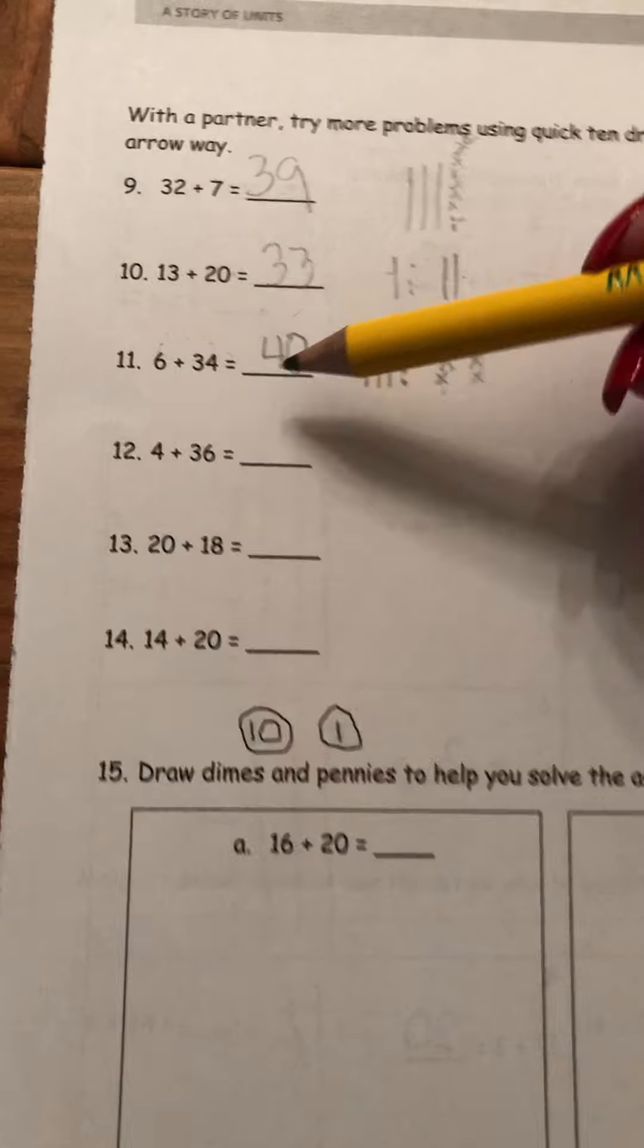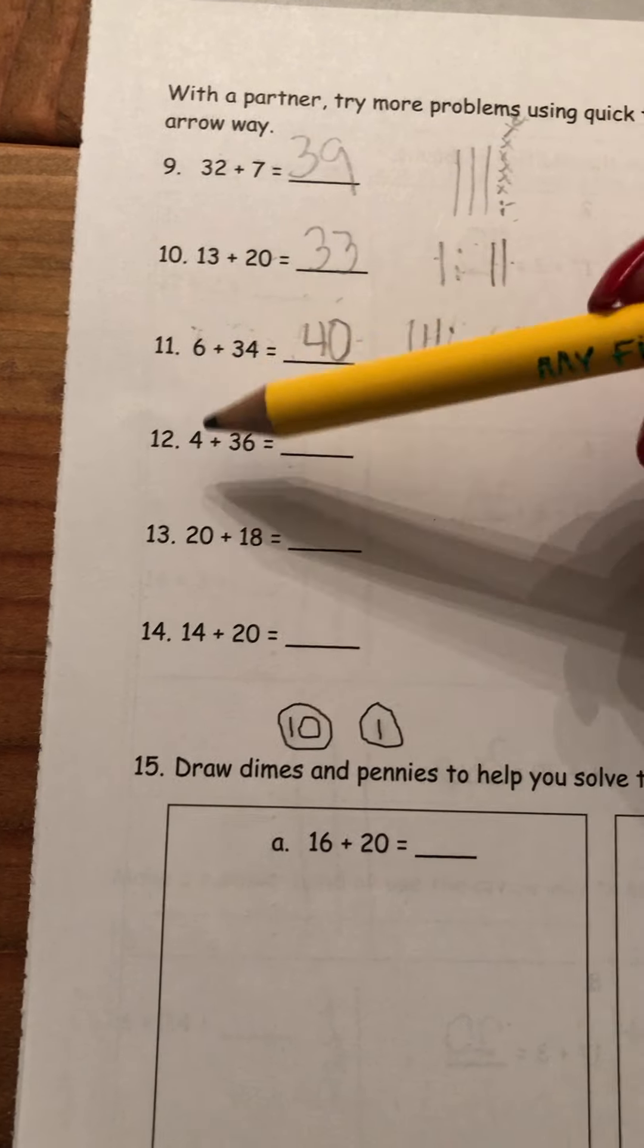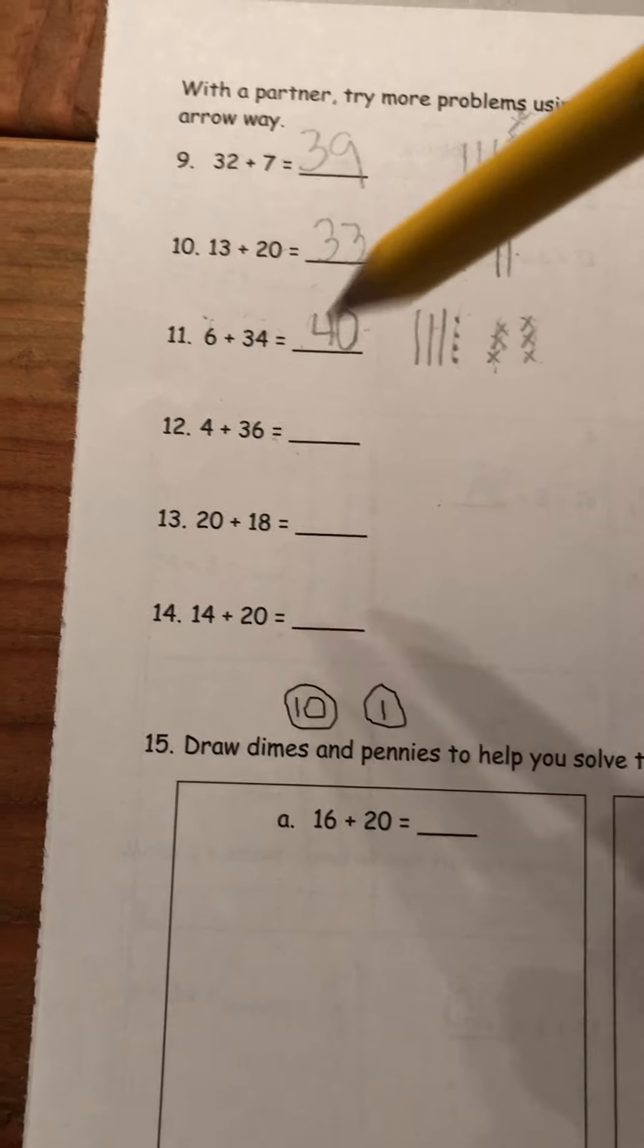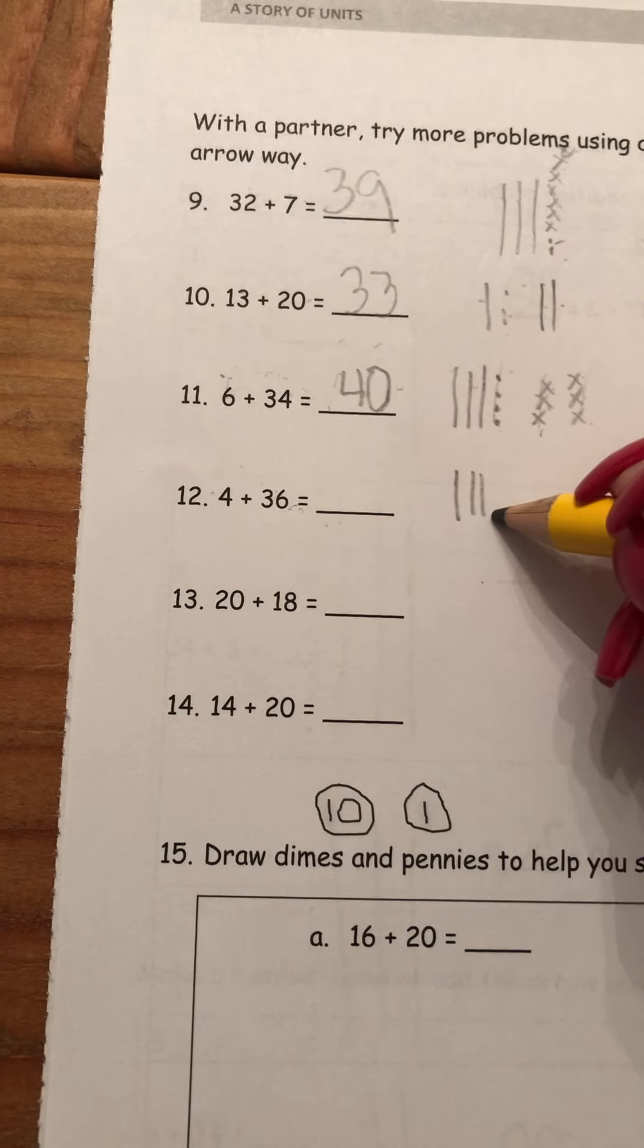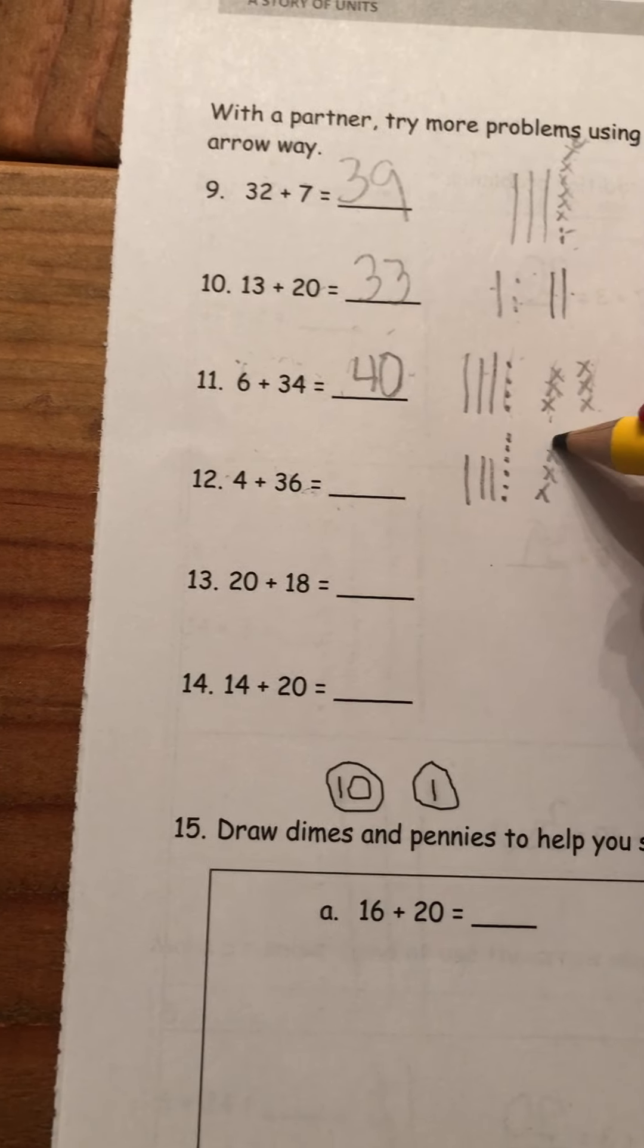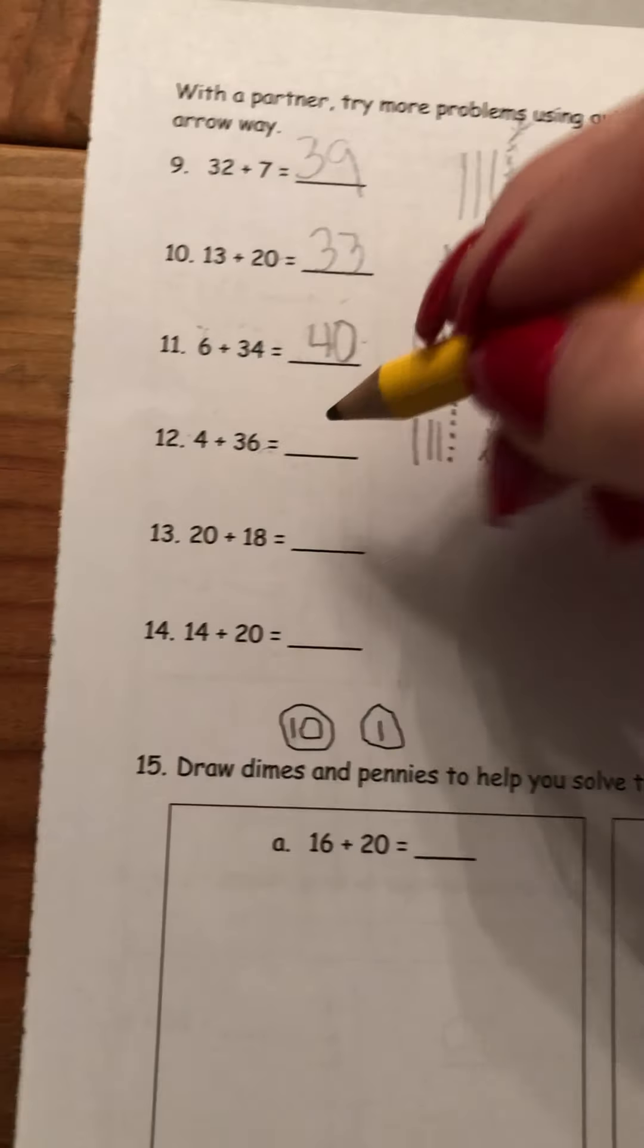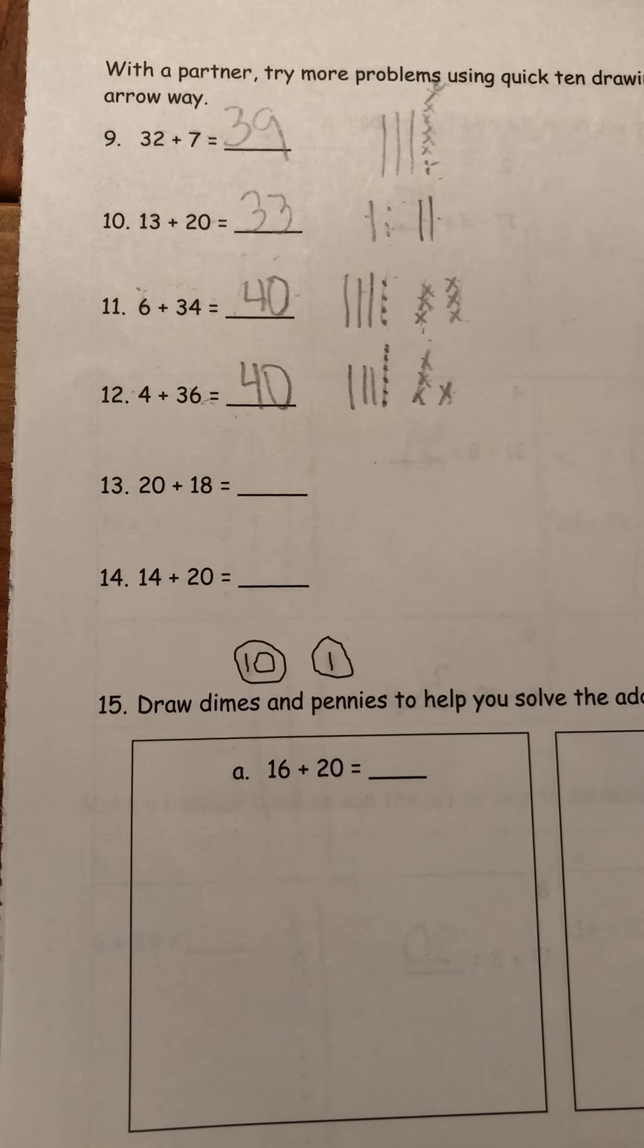Look at the difference in these two. 6 plus 34 equals 40. 4 plus 36 equals... Do you have a guess for what that might be? Just because of the way the numbers are arranged? Let's see. 10, 20, 30, 31, 32, 33, 34, 35, 36, and 4 X's. And I have 36. Let's count on. 37, 38, 39, 40. Good job. I knew you guys already knew that. I could tell.